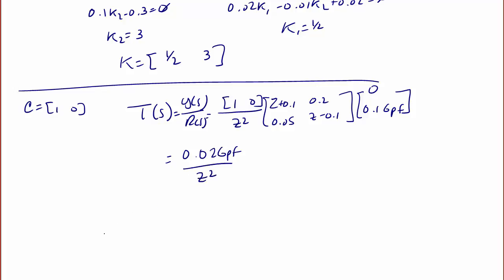We want our steady-state error to be 0, so ESS is 1 minus T of 1, and that has to equal 0. 1 minus 0.02 GPF has to equal 0, so GPF must equal 1 over 0.02, or GPF has to equal 50 for a 0 steady-state error. This concludes today's lecture on discrete-time systems state variable feedback.